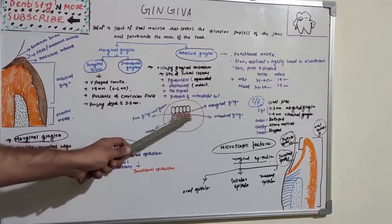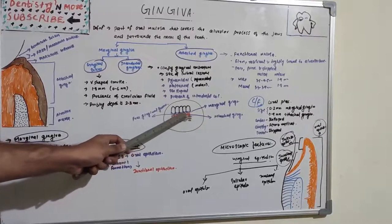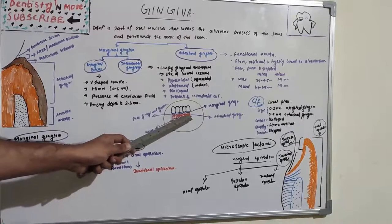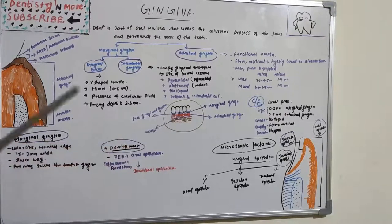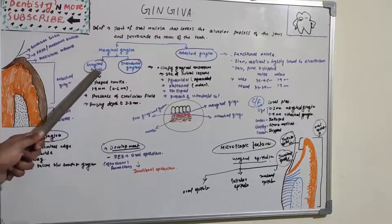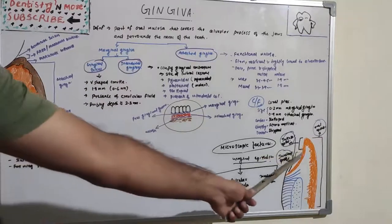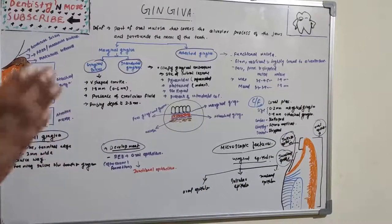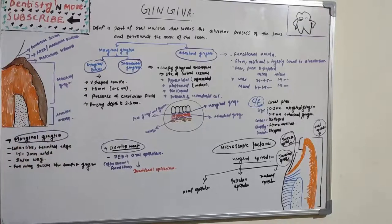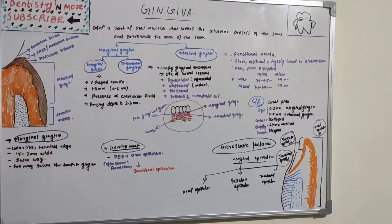Attached Gingiva is attached to the underlying bone, so it is not movable. It is firmly attached to the underlying alveolar bone. The attached Gingiva and marginal Gingiva are separated by a groove known as the free Gingival groove. The marginal Gingiva is shown in blue and the attached Gingiva in red, which is attached to the bone, and there is also alveolar mucosa.